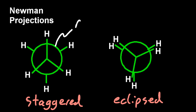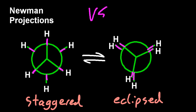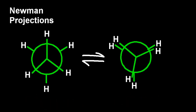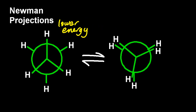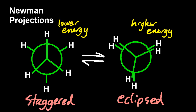The two conformers exist in equilibrium. Remember, it is the electron pairs that are repelling according to VSEPR — valence shell electron pair repulsion. The lower energy conformation is on the left (staggered) and the higher energy is on the right (eclipsed). Lower energy means more stable, so the staggered conformation is the more stable one.